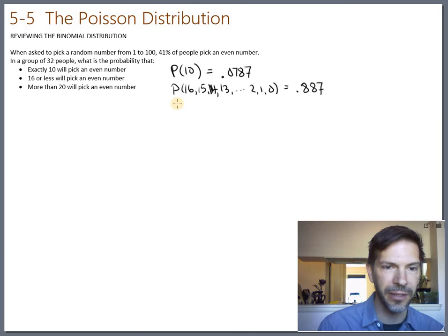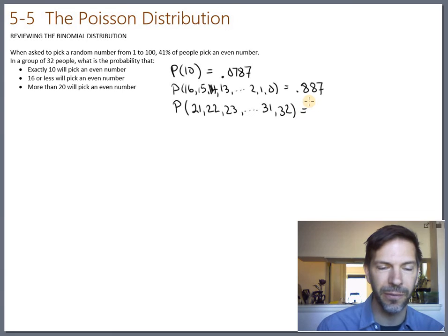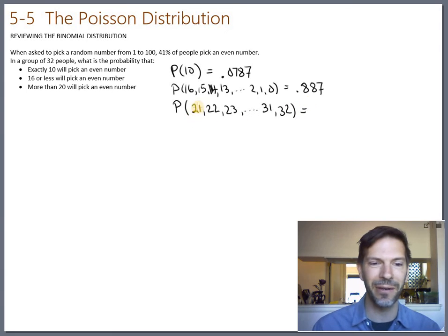The last one is more than 20. Keep in mind, more than 20 does not include 20 itself. We need to be more than 20. So this actually means 21 or 22 or 23 all the way up to 32. We have to be a little bit careful when we do StatDisk because StatDisk always includes the first number. So we can't put 20 in here because it will tell us 20 or more. Even though the phrasing is more than 20, we're going to have to put 21 in so we get 21 or more.